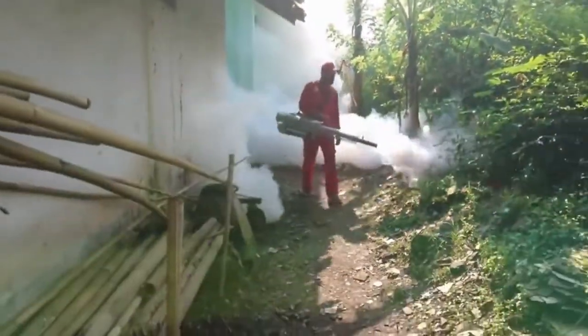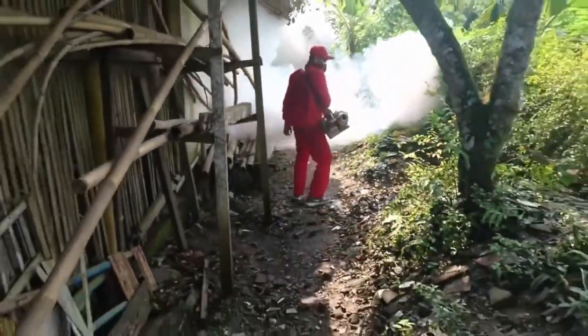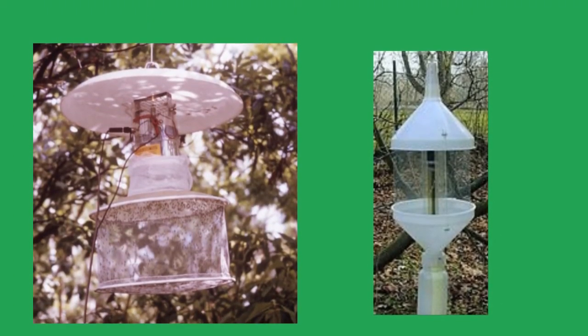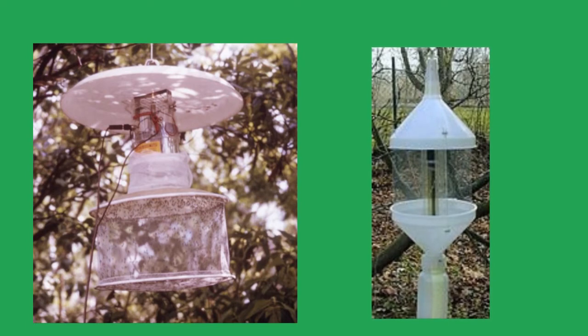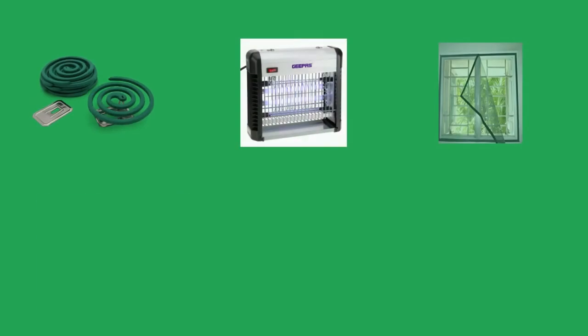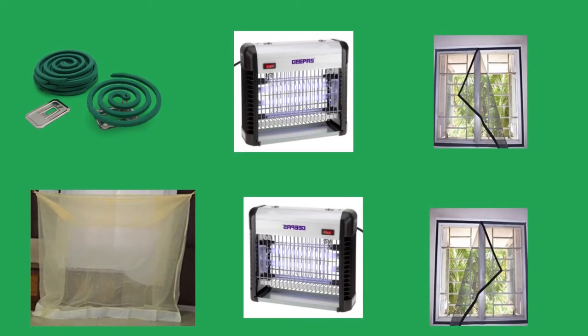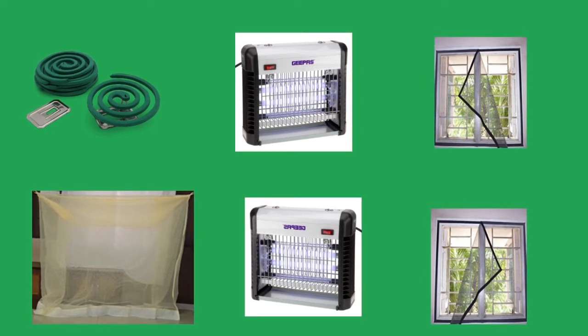Use a thermal fogger for space treatment in the early evening to kill adult mosquitoes. Place ready-to-use traps such as CDC traps, gravid traps, etc. For indoor treatment, place electric fly killers or electric traps. Install net mesh on vents, windows, doors, or other expected entry points to prevent mosquitoes from entering your facilities.